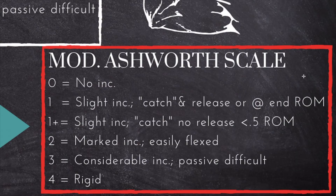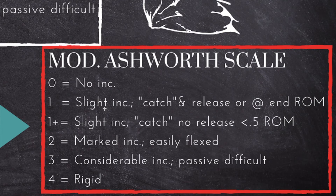Now let's move on to the Modified Ashworth Scale, which is very similar to the original. It is a six-point scale starting at zero and going to four; however, it has a one-plus level, which allows the therapist to be a little bit more detailed about what that slight increase in tone looks like. Zero means there's no increase in tone, similar to the original Ashworth. One means there's a slight increase in tone, and this can look like a catch and release — meaning at some point in the range of motion there's a catch or slight increase in tone and then that tone is released — or there's a slight increase of tone at the end of the range of motion. With a one-plus, there's also a slight increase in tone, but there is a catch and no release at less than half the range of motion, allowing you to be a little more specific. It is indicative of a little bit more tone.